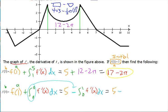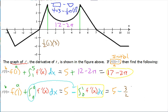So we're subtracting instead of adding. The integral from 0 to 1 represents just this little triangle. The triangle area is one-half times base 1 times height 3, which gives three-halves. So it's 5 minus three-halves: 5 is ten-halves, minus three-halves gives seven-halves. So f of 0 equals seven-halves.